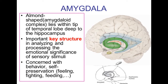The amygdaloid body is very important as a key structure in analyzing and processing emotional stimuli from external sensory inputs. It is also concerned with behavior and self-preservation of the human being — like feeling, fighting, and feeding — so it is concerned with functions that preserve the human being, whether by seeking food or defending oneself, including suppression of feeling.